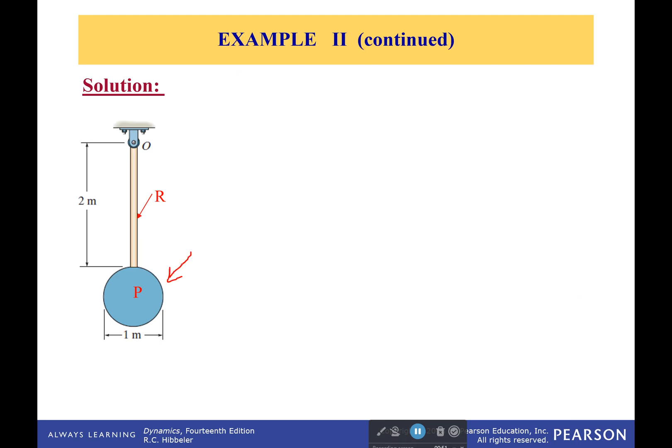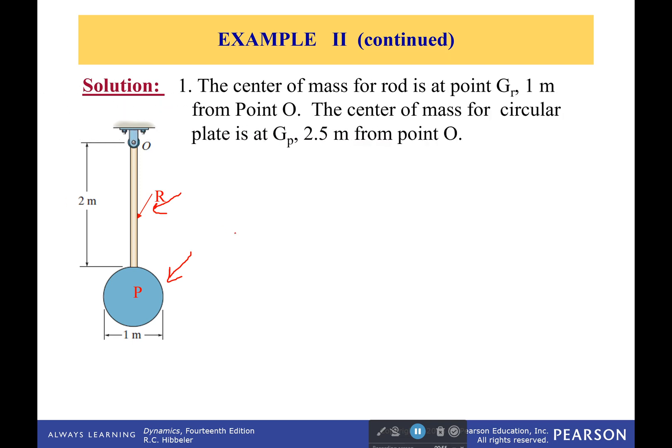First off, we're going to have this mallet head and the rod, which we'll call R and P. Now, the center of mass for the rod is at point G_R, which is going to be its centroid, which is one meter from point O.